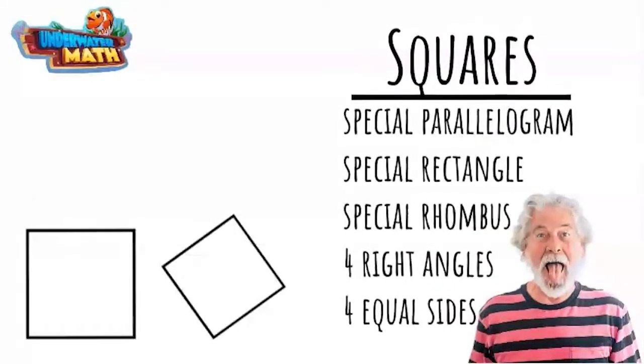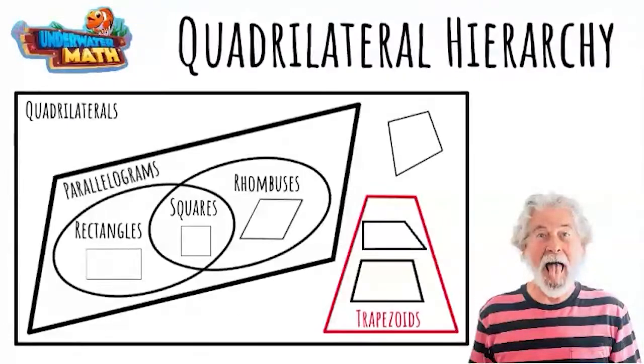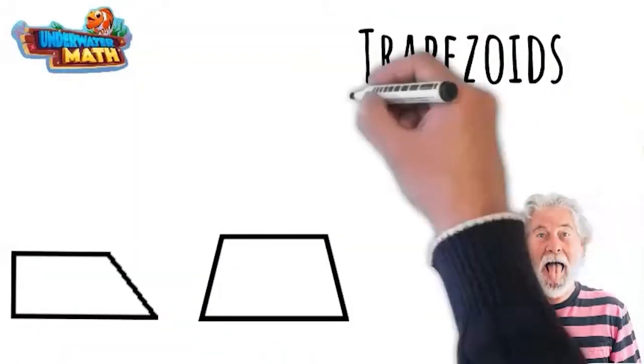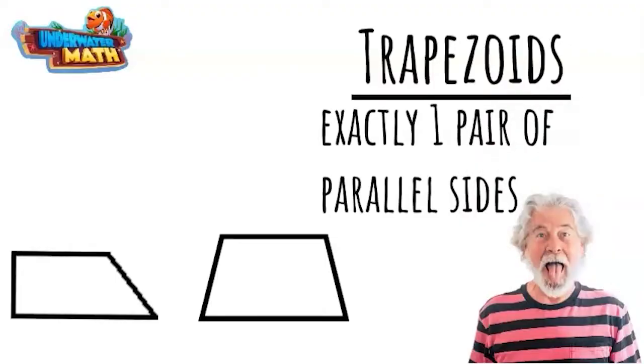Together, they make the lethal baby square at the bottom of the quadrilateral hierarchy. Then over here, you've got these other quadrilaterals that have exactly one pair of parallel sides. They're called trapezoids.